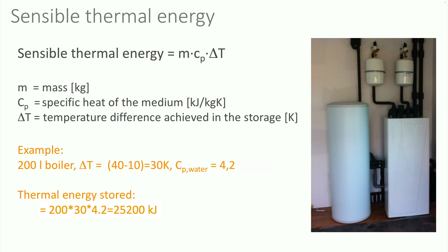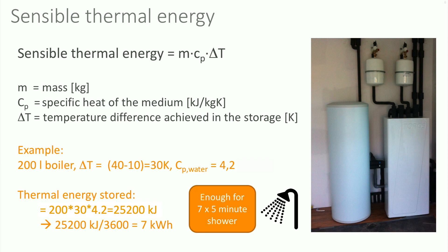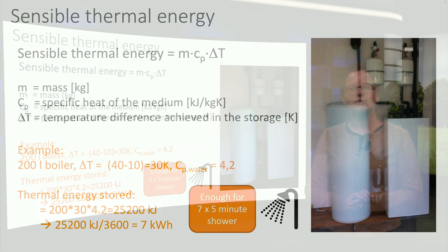If you divide this value by 3600, you will get the energy content in the unit kWh, resulting in a value of 7 kWh of thermal energy stored. This is enough for taking 7 showers of 5 minutes.